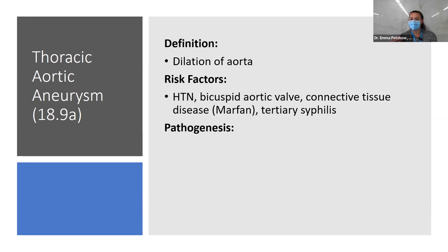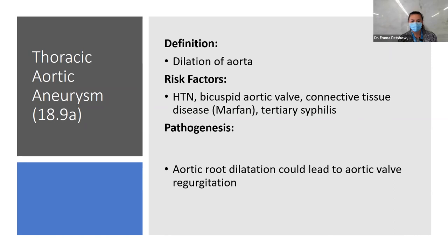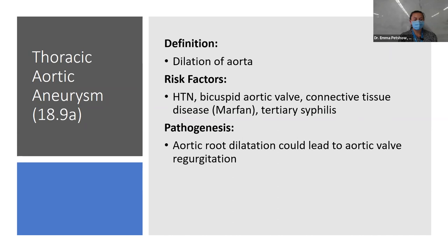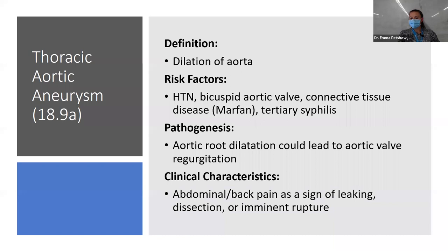Thoracic aortic aneurysms are riskier than abdominal, but when stable, often managed with watchful waiting — no symptoms unless complications develop. Abdominal aortic aneurysm shares those risk factors plus notably tobacco use and male gender — picture an older male who smoked his whole life with a family history. Pain with AAA is a sign of leakage, dissection, or rupture — symptoms mean it's probably moving toward a complication rather than being stable.